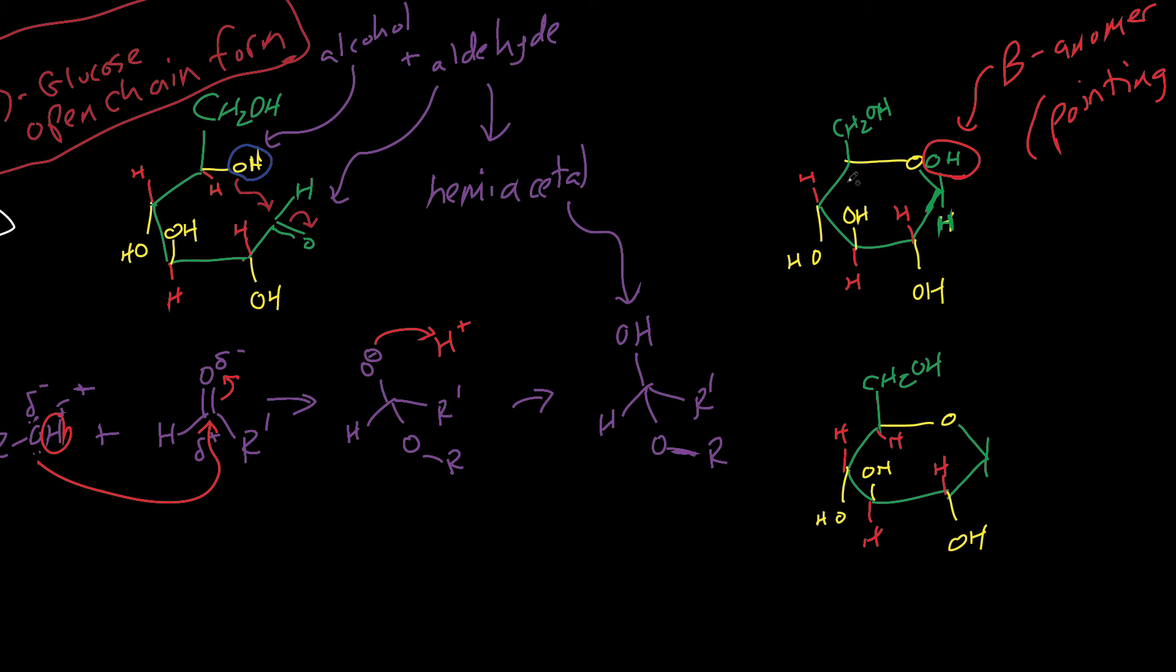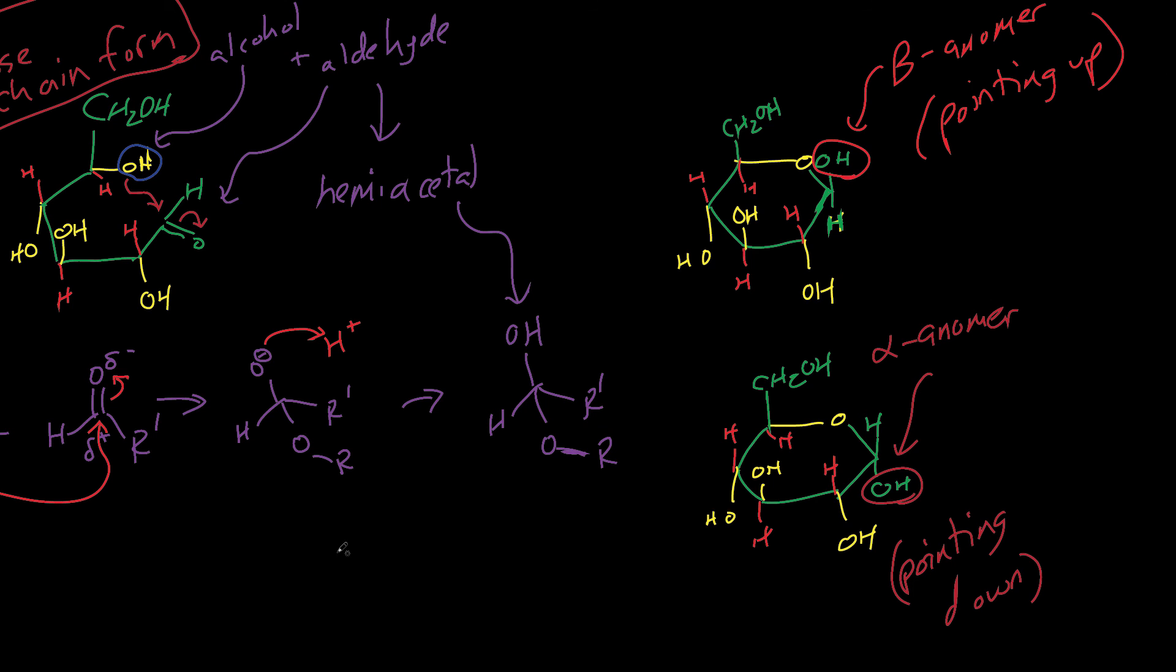Why do you get alpha and beta-anomers? The beta-anomer when your OH is pointing up, alpha-anomer when your OH is pointing down. Well, it has to do with the fact that that aldehyde in glucose is trigonal planar and flat.